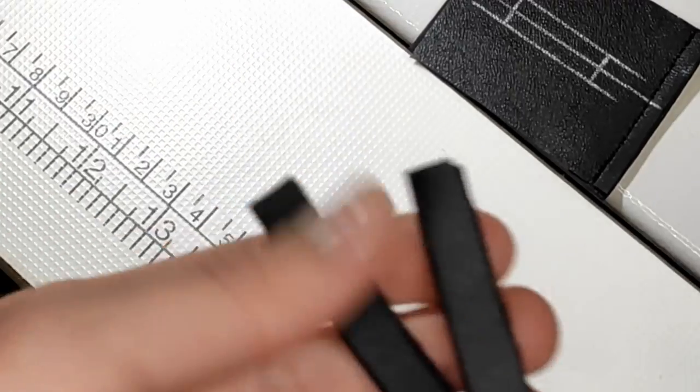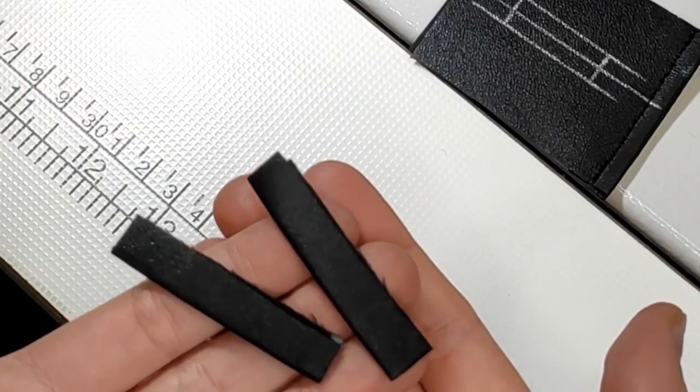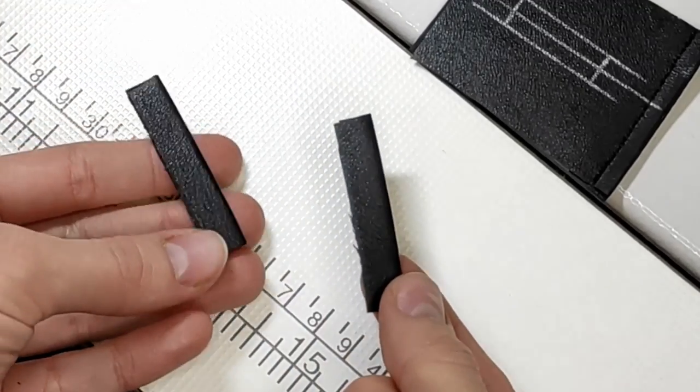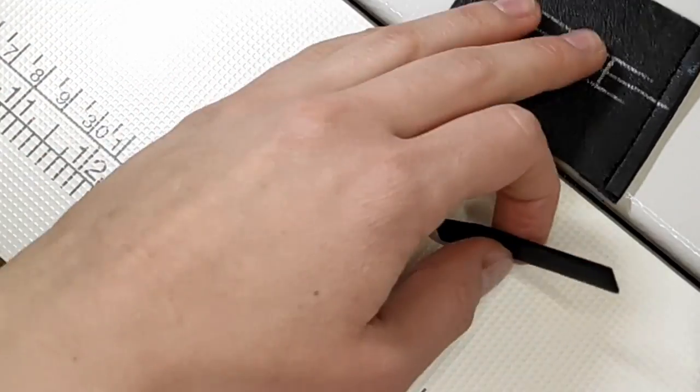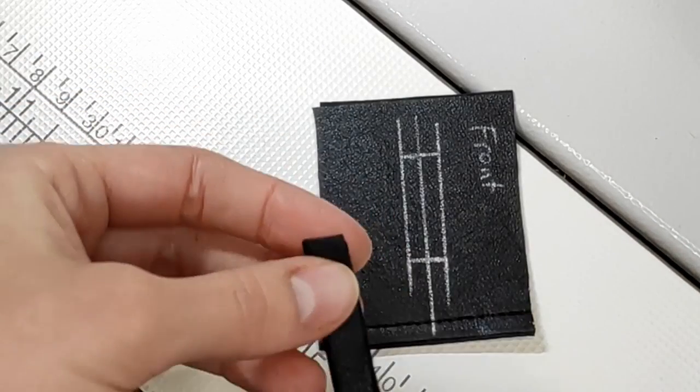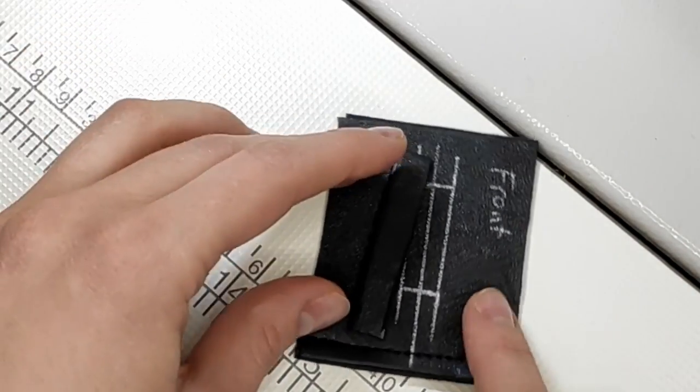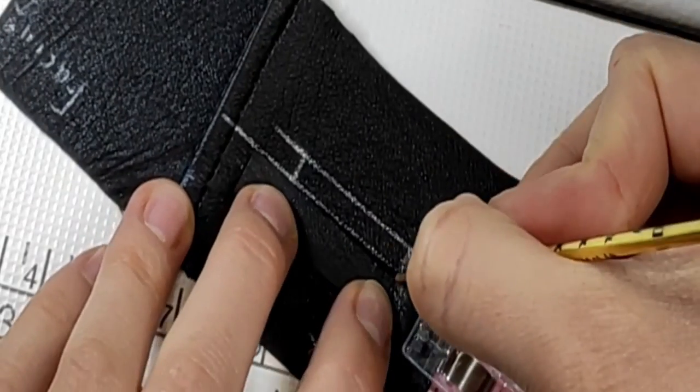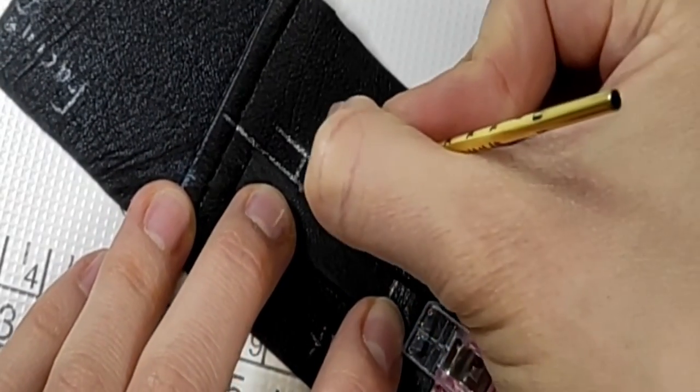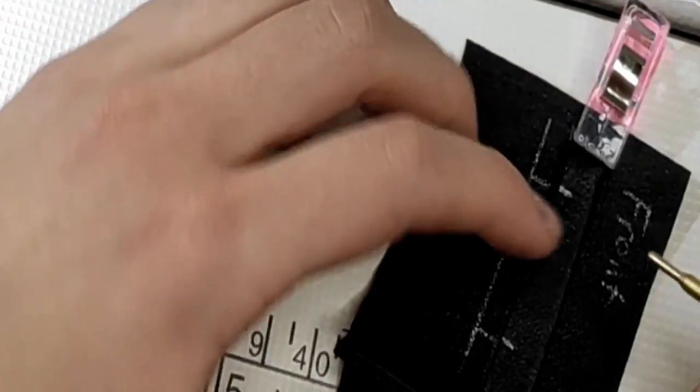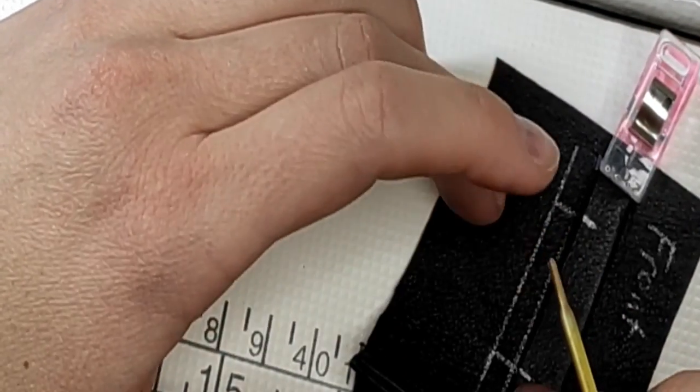What we need to do next is sew our folded welts to the front. We need to align the raw edge of the welt to the center of the buttonhole. We can mark the length of the buttonhole again just to be sure everything is precise. The more precise everything is, the more beautiful the final buttonhole will be.